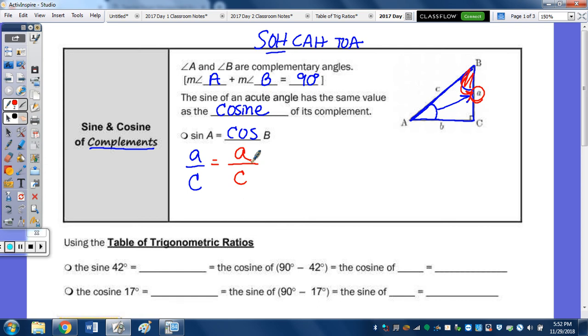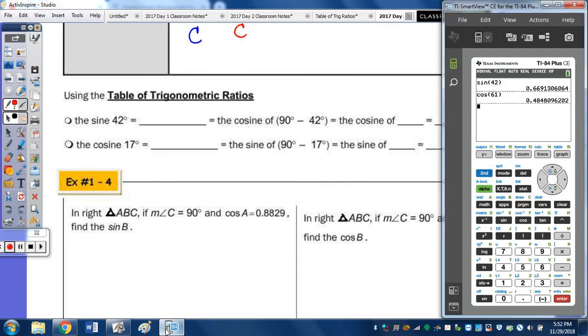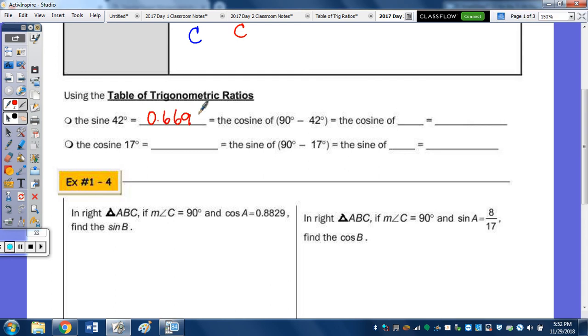It says to use the table of our trig ratios. But rather than using the trig ratios, let's go to the calculator. So the sine of 42, and we want the cosine of 17. And let's round it as the table would, and take it out four decimal places. So the sine of 42 degrees is 0.6691, and the cosine of 17 is 0.9563.